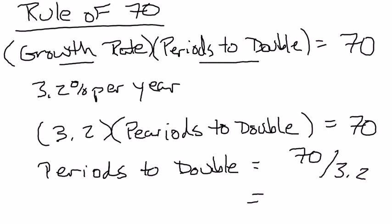So periods to double equals 70 over 3.2. And if you go ahead and you do the math, you should come up with 21.8 or 21.9 years since the growth rate is in years. So that means, historically, the size of the United States economy has doubled every 22 years, essentially, or every 21.9 years.